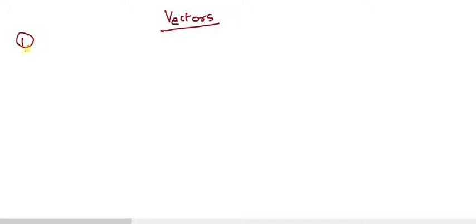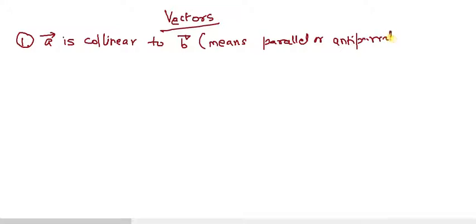We'll be discussing about vectors and the first point says, suppose you have vector A is collinear to vector B. That means either they are parallel or anti-parallel. I'm sorry for writing this wrong because I feel very difficult to write it on my laptop so I hope you can understand. So it says that vector A, if it is parallel then definitely vector A can be known as lambda times vector B.